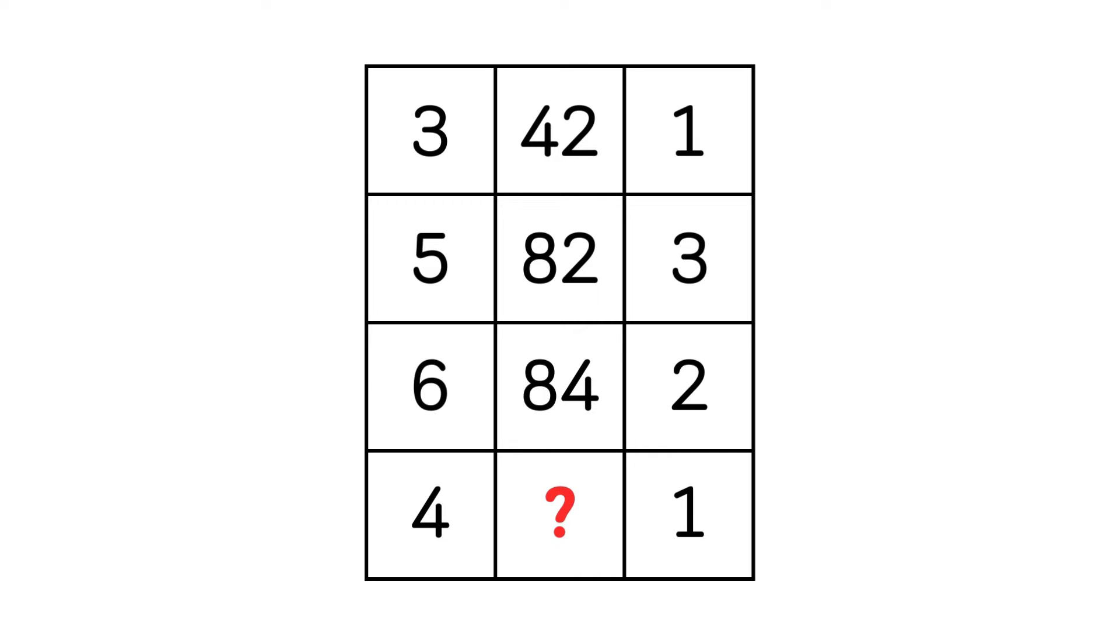All right, in the first column and the last column we can see each box has a single digit number. In the middle column, each box has two digit numbers and they are very large numbers comparing to the others. So it seems we can't get the middle number by doing basic arithmetic operations on the other numbers.